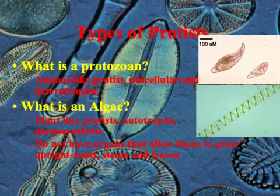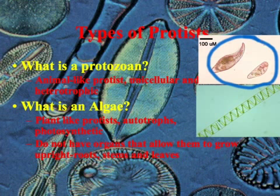So, the types of protists. We can divide these into two major main categories. The first one would be: what is a protozoan? A protozoan is different than a protist — it's a category of a protist. The first thing you're going to want to look at is they are animal-like protists that are unicellular and heterotrophic, so they have to rely on other organisms for their metabolism. You see an example of that right here.